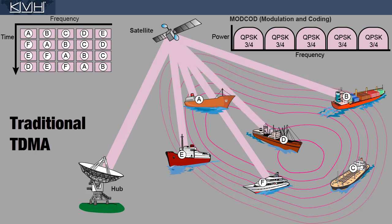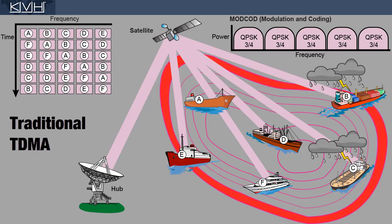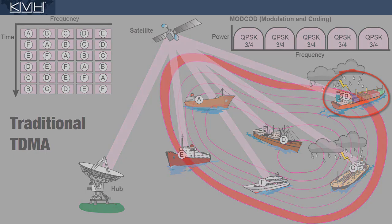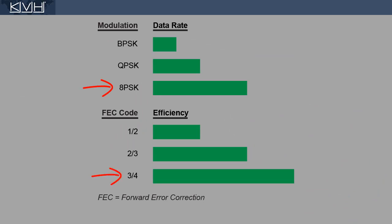Since signal strength degrades in bad weather and at the edge of the beam, these in-route properties must be configured for the worst-case scenario. This limitation precludes the network from implementing faster, more efficient connections.